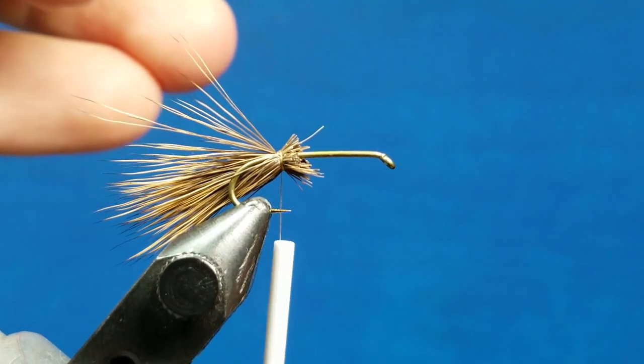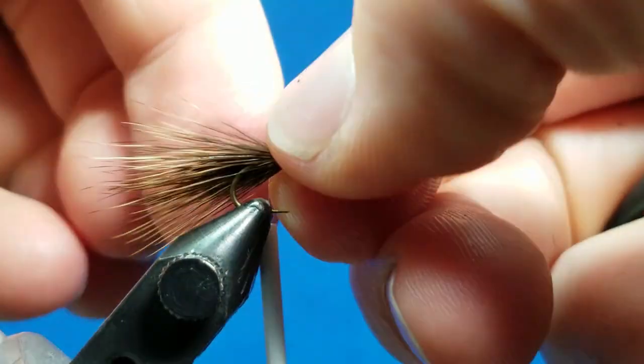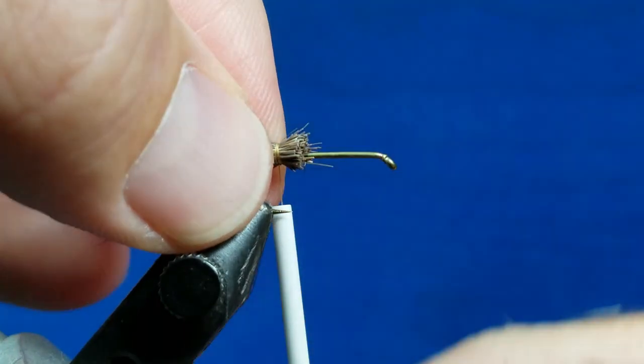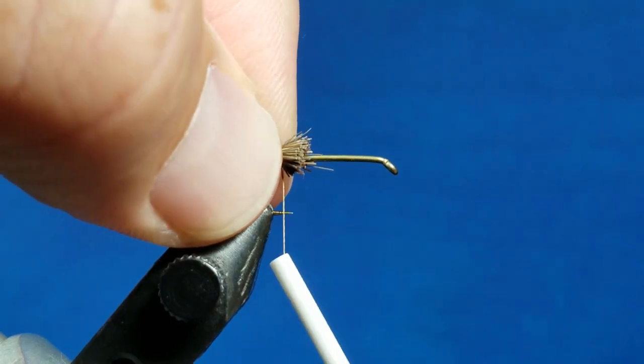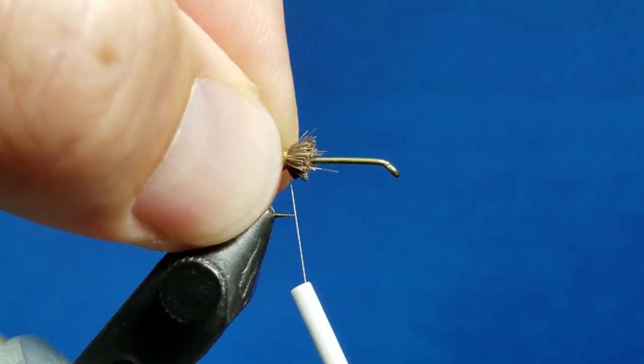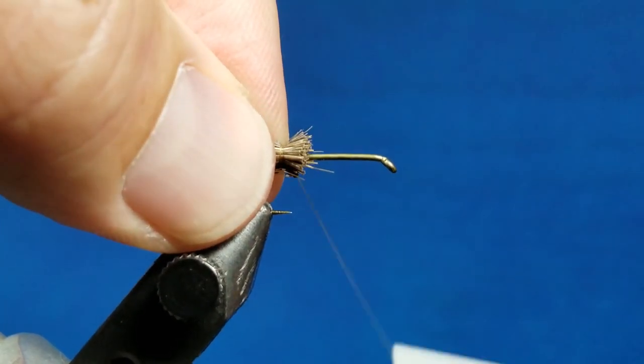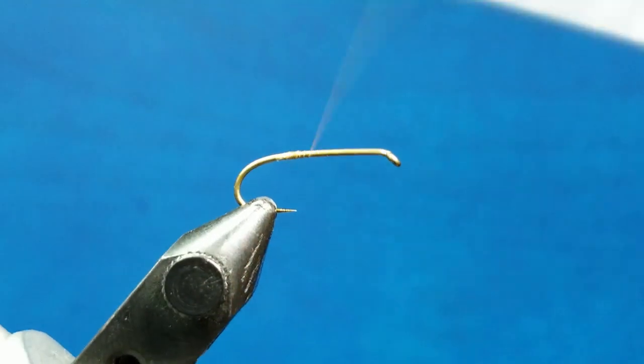So when you get these big clumps here, I've got thread underneath there, but when you get just way too much hair it tends to clump. The amount of your tension is a little bit reduced and it likes to roll and move back and forth. So be super careful on the amount of hair that you use. The tying rule that has always benefited me is less is more, without a doubt.